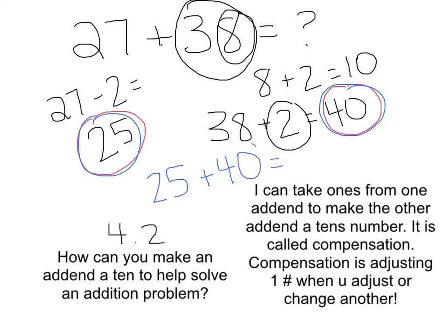Now let's do the ones first. 5 and 0 make 5. And now let's do the tens place value. 4 and 2 make 6. The answer to our problem, which is the sum, is 65.